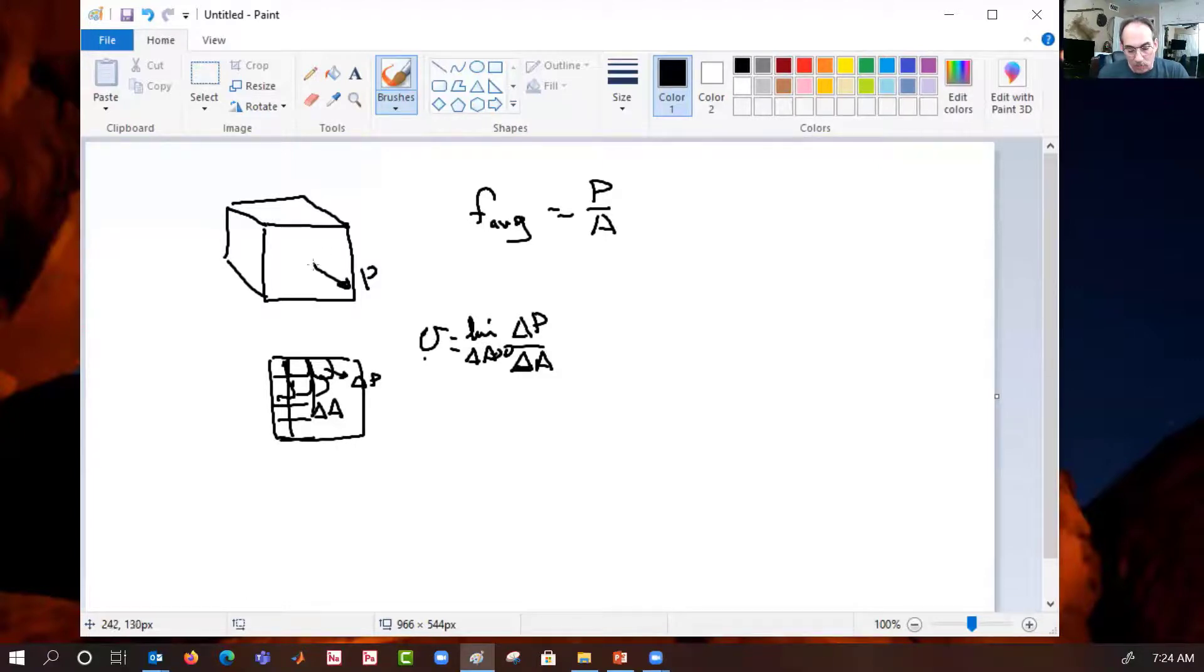So, when we started with the average, we said we got P over this area. But really, if you want to know what the detailed stress distribution is, you would have to break this up into smaller and smaller pieces. And for each one, you would take a little change in elemental force over the change in area. And that gives you what the stress is on that element.